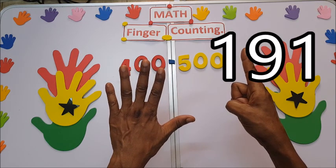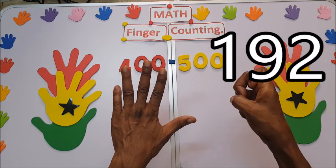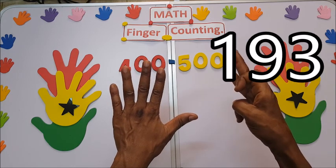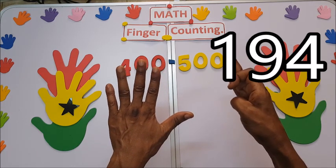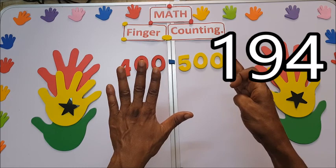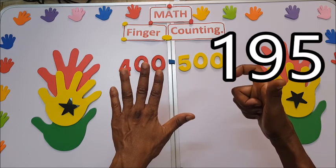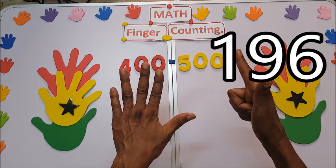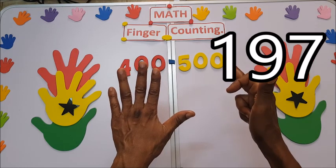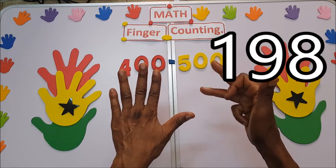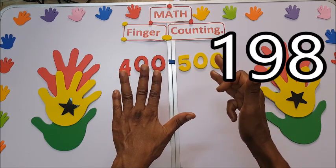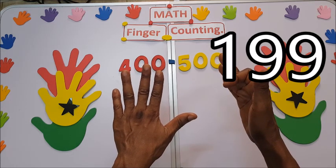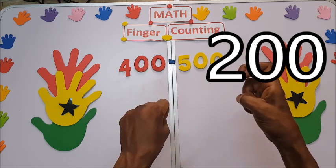190, 191, 192, 193, 194, 195, 196, 197, 198, 199, 200.